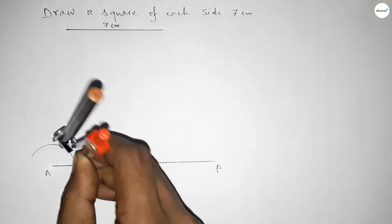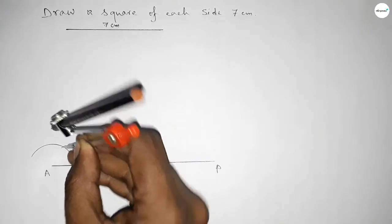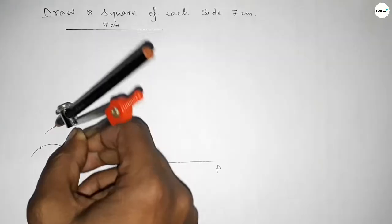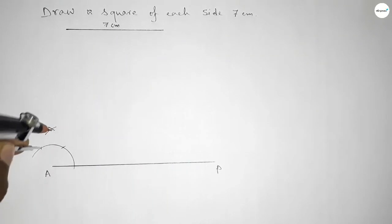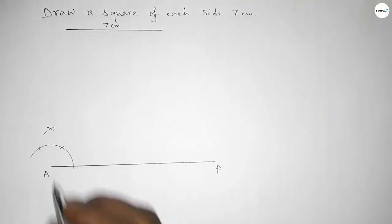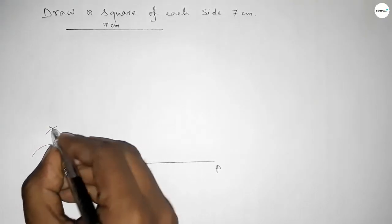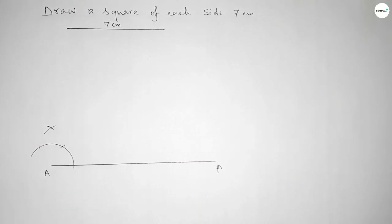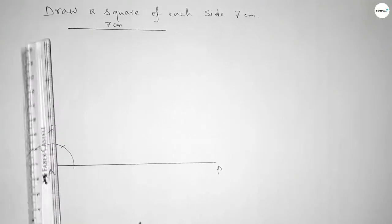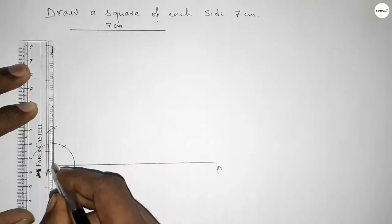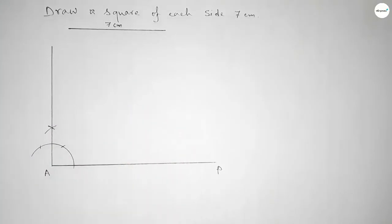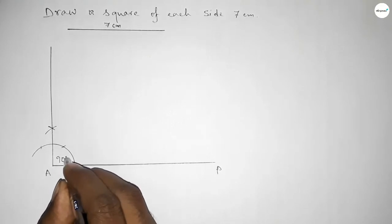With the same length, putting the compass here and cutting here, then putting the compass again and cutting — both curves intersect at a point. Now joining this to get a 90-degree angle. So this is a 90-degree angle.